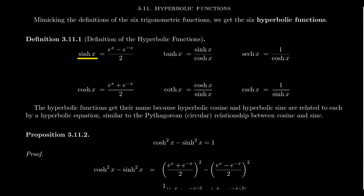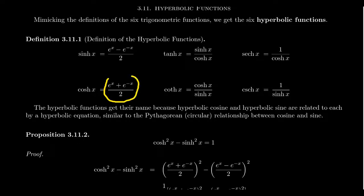You first get the hyperbolic sine function, which is denoted S-I-N-H of x. It's sometimes called 'sinch' for short. It is defined as e to the x minus e to the negative x, over 2. Similarly, hyperbolic cosine, denoted C-O-S-H of x, called 'cosh' for short, is defined to be e to the x plus e to the negative x, over 2. The only difference in their formula is sinch has a negative sign, and cosh has a positive sign.